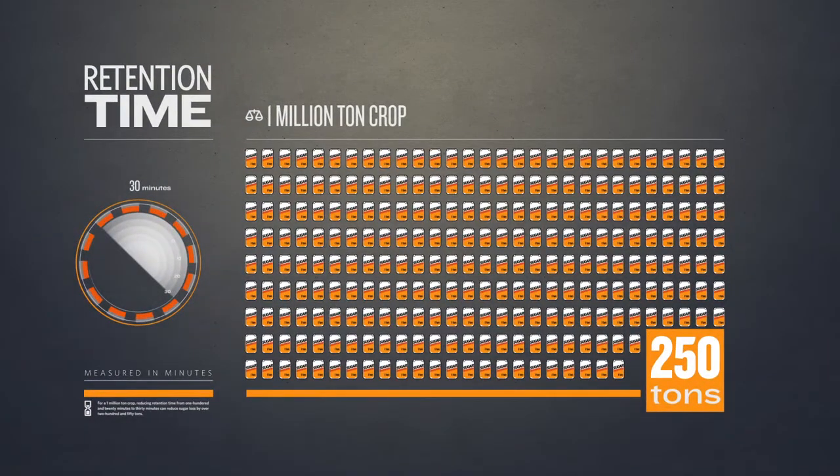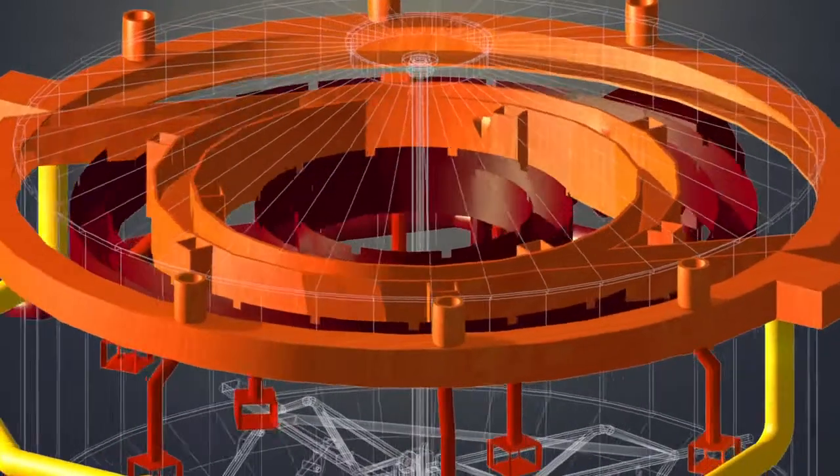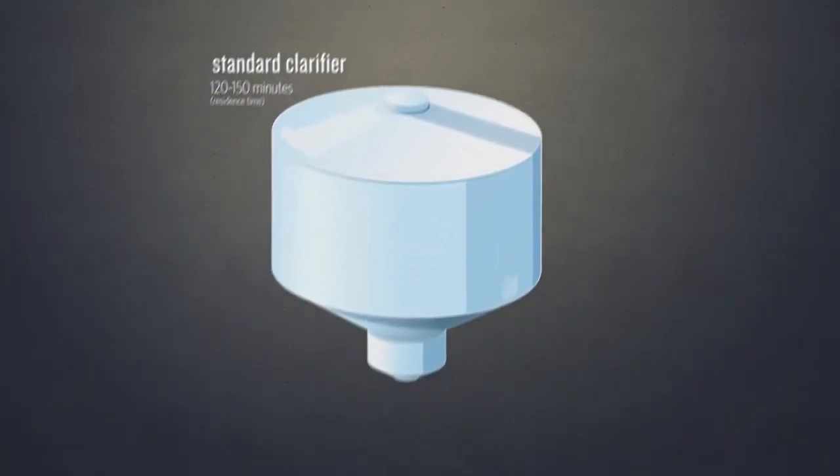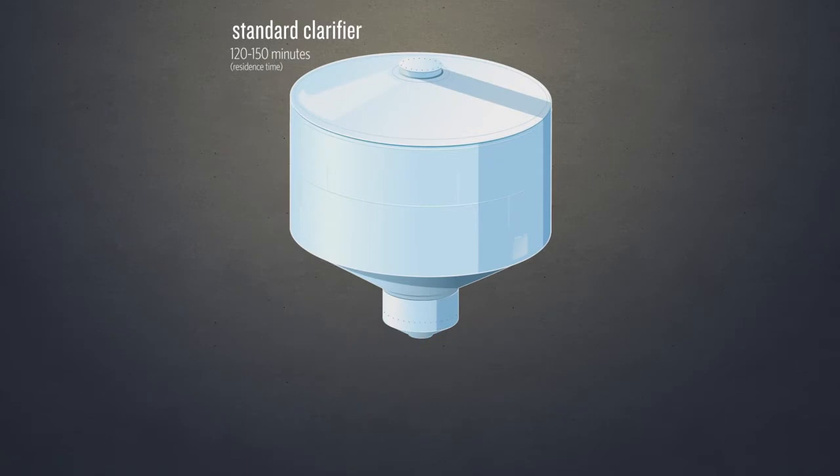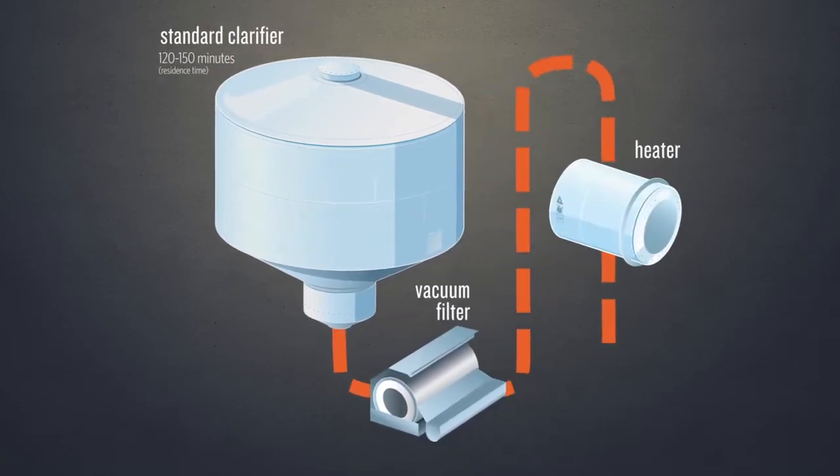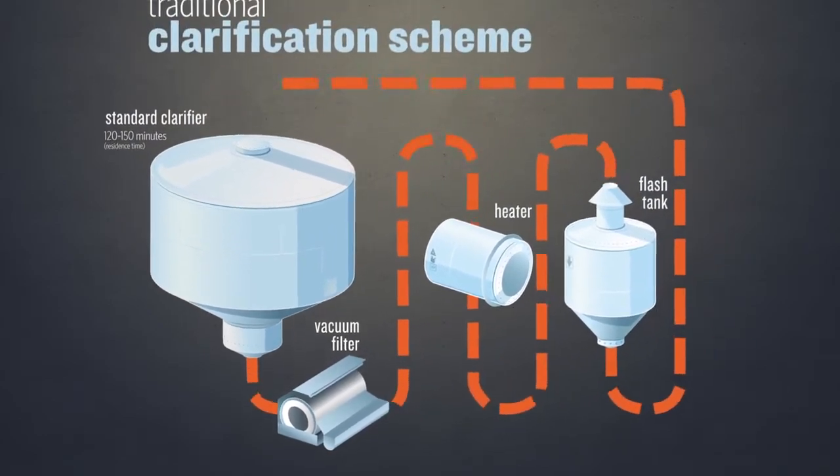Increased overall yield isn't the only benefit. The Crompion LLT clarifier also has a secondary use. Traditional clarification schemes include only one clarifier, leaving much of the liquid to be recirculated. Once the juice is filtered out of the mud, it's sent back to the heaters only to make another trip through the clarifier. This process wastes energy,